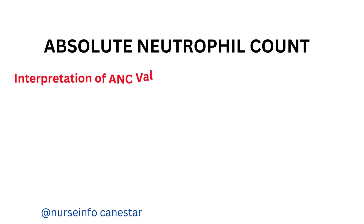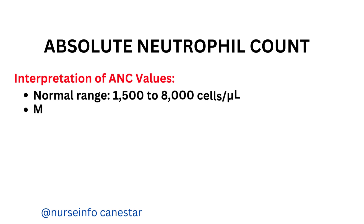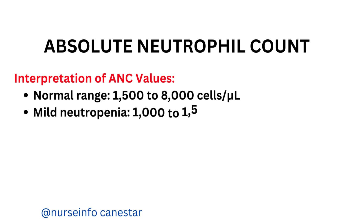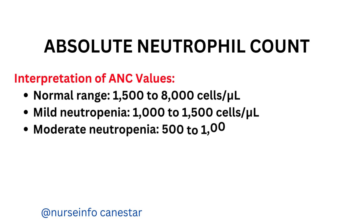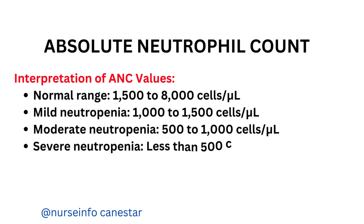Interpretation of ANC values: Normal range is 1,500 to 8,000 cells per microliter. Mild neutropenia: 1,000 to 1,500 cells per microliter. Moderate neutropenia: 500 to 1,000 cells per microliter. Severe neutropenia: less than 500 cells per microliter.